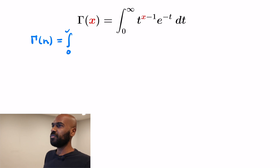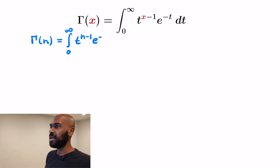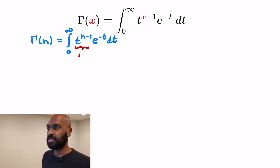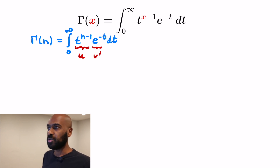From the definition, gamma of n is the integral from 0 to infinity of t to the n minus 1 times e to the negative t dt. When we look at this integral, it looks kind of complicated because n could be a very large number like 75. So we'll integrate by parts to try to do something.